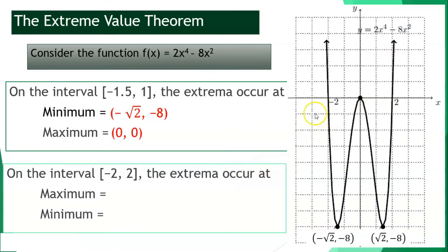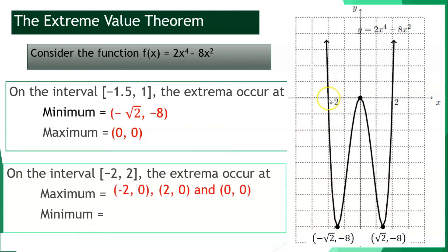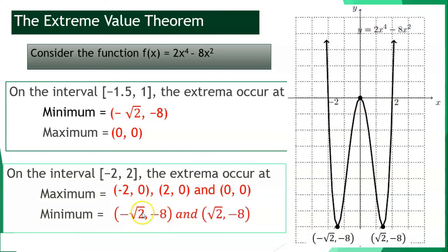For the interval from negative 2 until positive 2, our maximum points are located at three different points: negative 2, 0; positive 2, 0; and 0, 0. The minimum points are located at negative square root of 2, negative 8, and positive square root of 2, negative 8. So the maximum is the highest point, while the minimum is the lowest point.